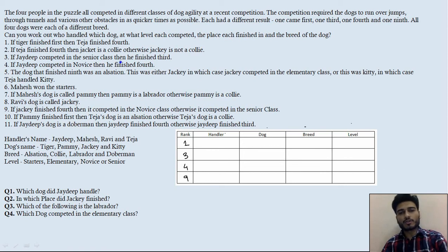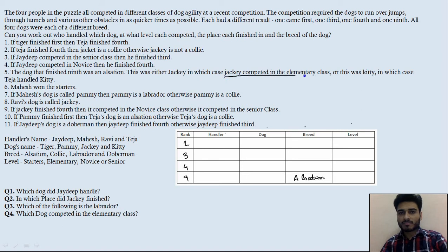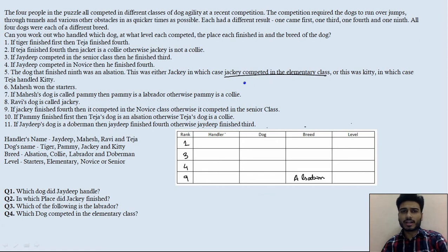The dog that finished ninth was an Alsatian — this is a specific condition we can use. The breed of the ninth-ranked dog is Alsatian, so we fill that in. This was either Jackie, in which case Jackie competed in the elementary class. Let's check if any other condition is linked to Jackie and try to collaborate both conditions.